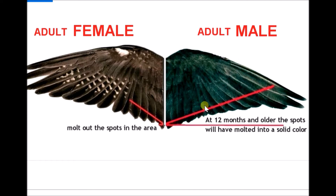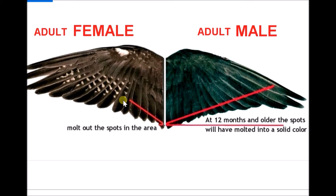When the female is young, you will see spots in the complete wing stretch. As it grows, the spots close to the body will start disappearing. So an adult female will not have spots close to the body section — it will have spots only in this partial stretch of the wing.